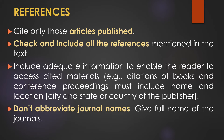In the reference section, cite only those articles that have been published. Check and include all references mentioned in the text, and include adequate information to enable readers to access the cited materials. Citations of books and conference proceedings must include the name and location of the publisher — including city, state, and country. Do not abbreviate journal names in the reference section; give the full names of the journals.